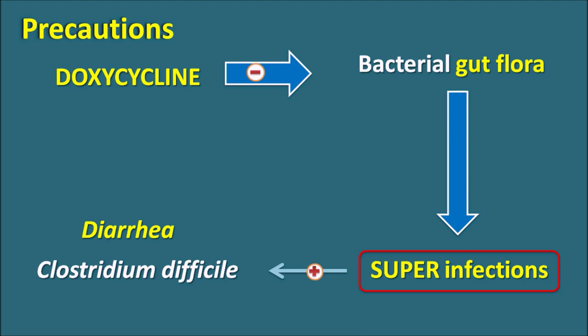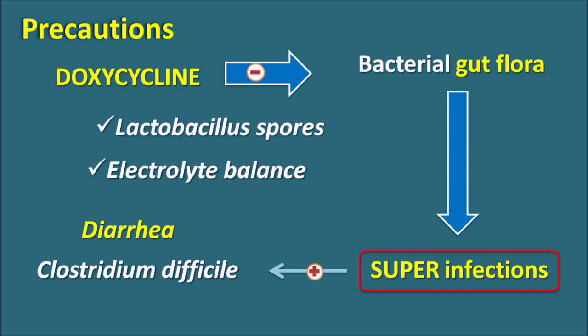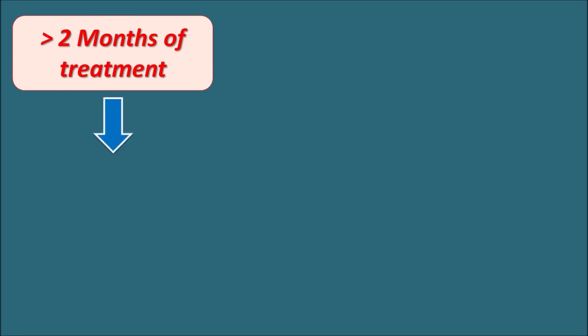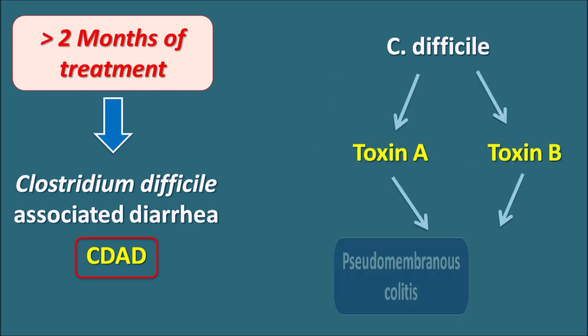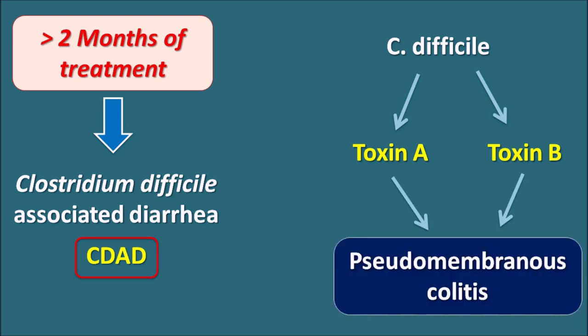This diarrhea can be controlled by co-administration of Lactobacillus spores, and can also be treated symptomatically by maintaining electrolyte balance. When doxycycline is used for greater than two months, it can lead to Clostridium difficile-associated diarrhea, commonly known as CDAD. Clostridium difficile produces toxins — toxin A and toxin B — which cause inflammation resulting in pseudomembranous colitis, leading to diarrhea in patients. This is an important precaution when doxycycline is used for longer periods.